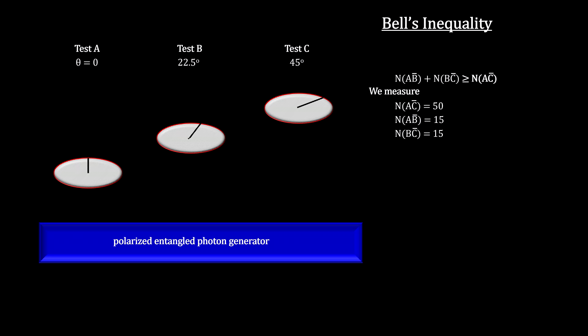Bell's inequality equation reads that 30 is greater than or equal to 50, which is false. So, the assumption that a changed entangled electron has no impact on its entangled partner is false. Therefore, there are no hidden variables as Einstein had proposed.